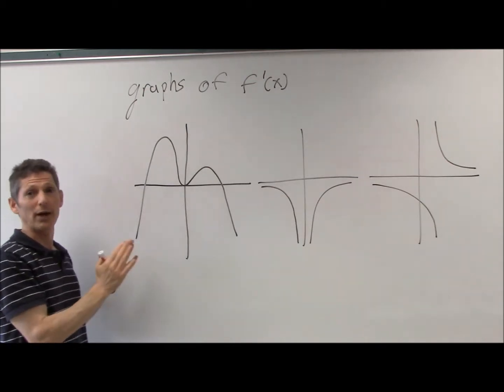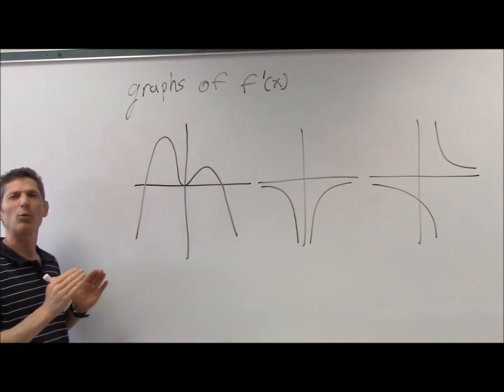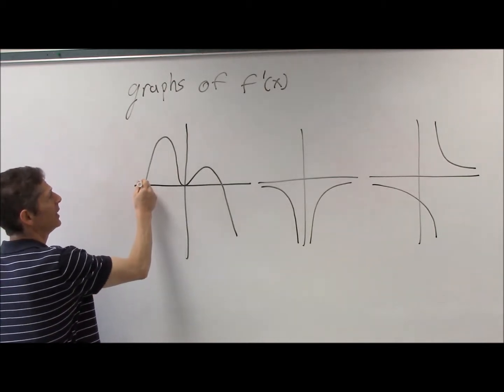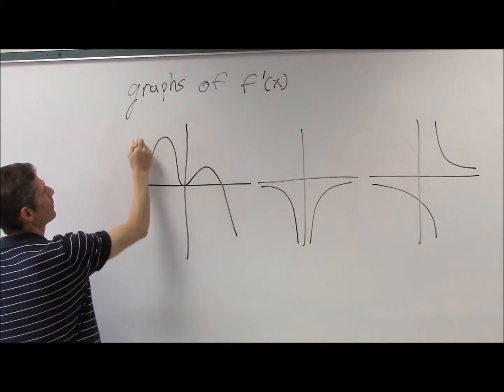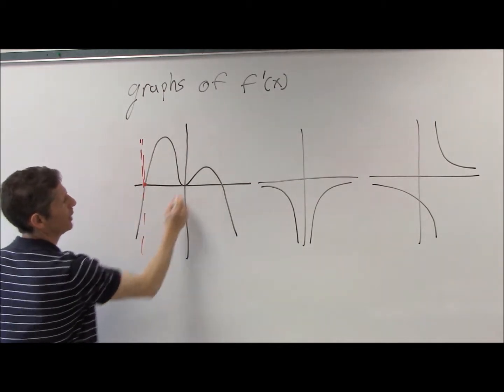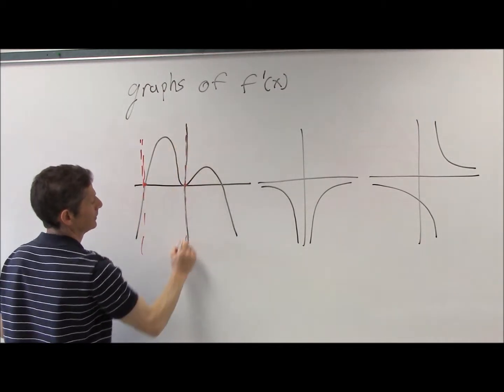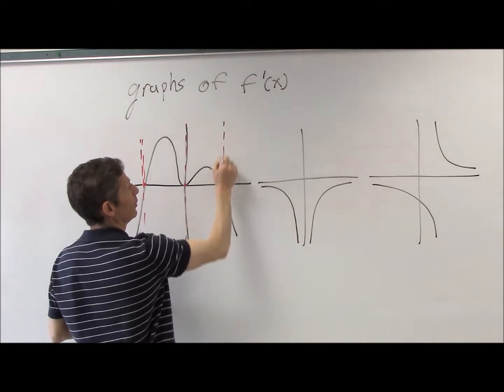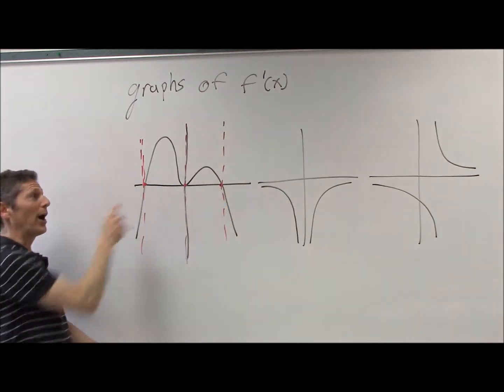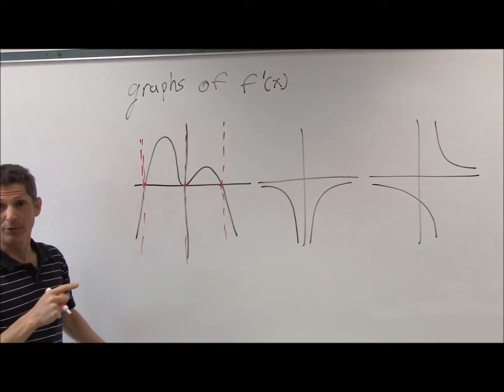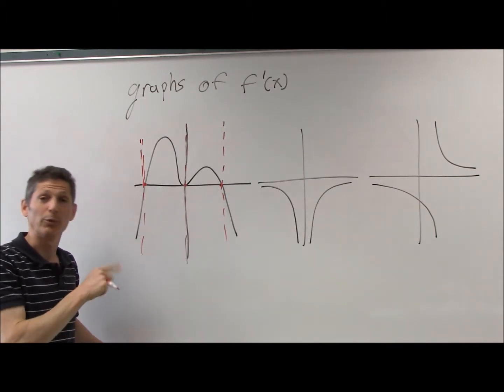So I'm just going to look at the y-value, and I always begin by looking at where the y-value is 0 or undefined. In this case, y-value is 0 right here, right here, and right here. When the y-value of the derivative is 0, I have a critical point on the original function.